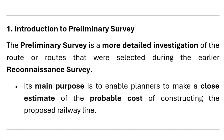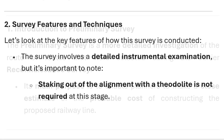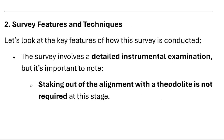Let's start by understanding what a preliminary survey is. The preliminary survey is a more detailed investigation of the route or routes that were selected during the earlier reconnaissance survey. Its main purpose is to enable planners to make a close estimate of the probable cost of constructing the proposed railway line. The survey involves a detailed instrumental examination, but it's important to note that staking out of the alignment with a theodolite is not required at this stage.